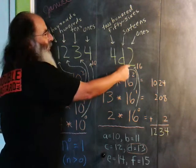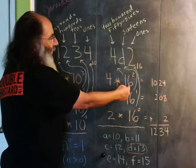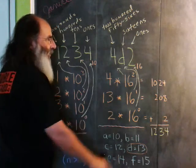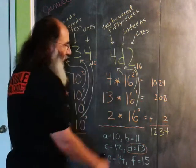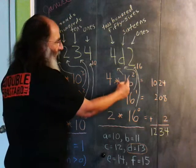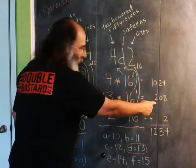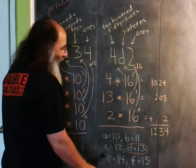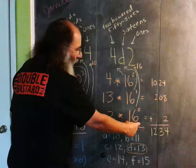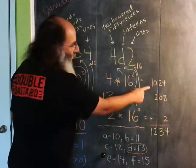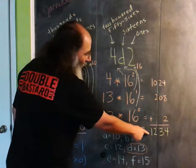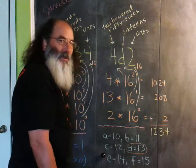So 4D2, we have 4 units of 256, which is 1,024. We have 13 units of 16, which is 208. And we have 2 units of 1, which is 2. And when we add up these numbers, we get 1,234.